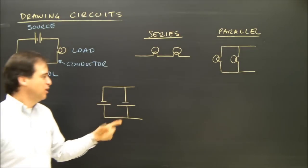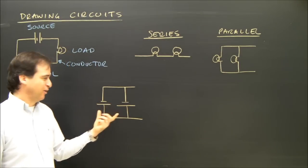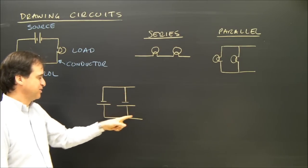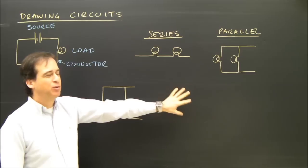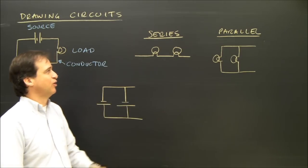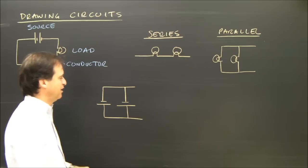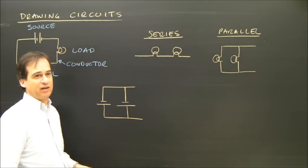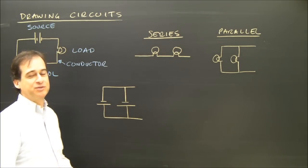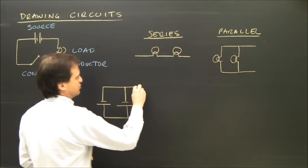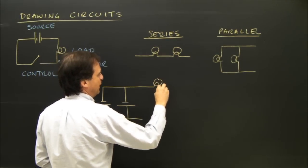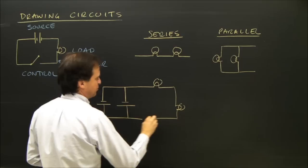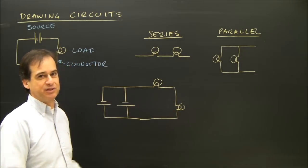There are my two cells in parallel — I've got one cell here and one cell here. Now I'm going to put whatever's using that electricity over on the right-hand side. So it might say you have two cells in parallel and you want two light bulbs in series on this side. So I go like this — one light bulb, and then series means one after the other. There are two light bulbs in series.